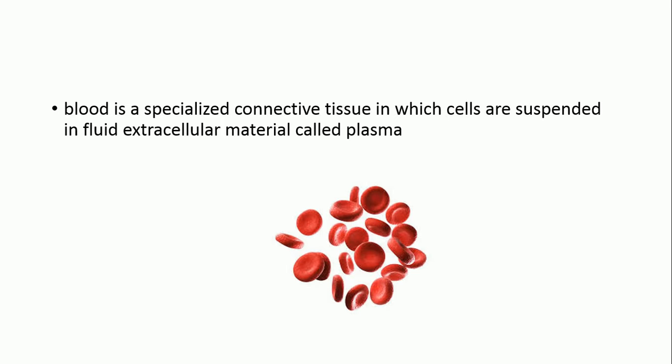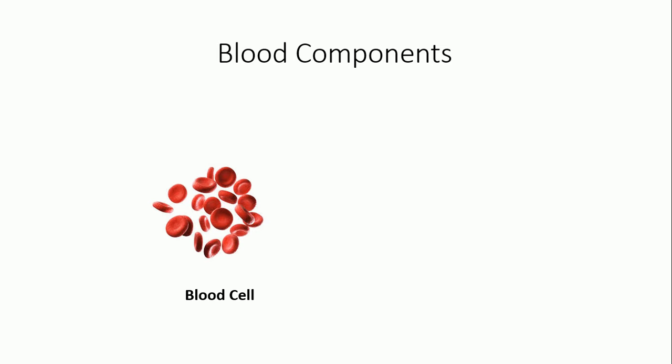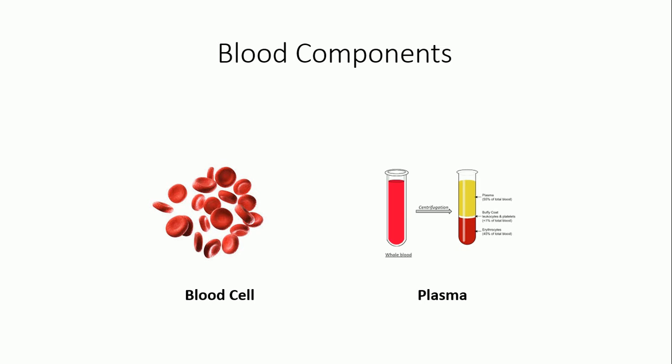Blood is a specialized connective tissue in which cells are suspended in fluid extracellular material called plasma. It has two components: blood cells and plasma.